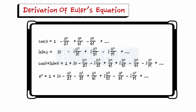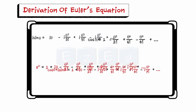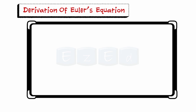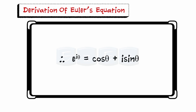All the terms in e^(iθ) equal all the terms in cos θ plus i sin θ. Therefore, we get e^(iθ) = cos θ + i sin θ, which is Euler's equation.